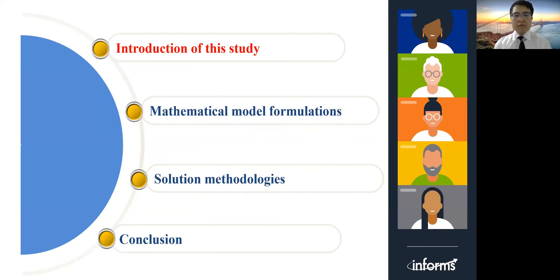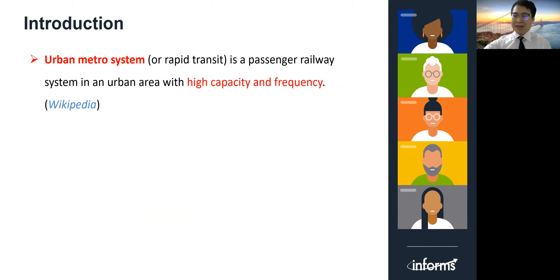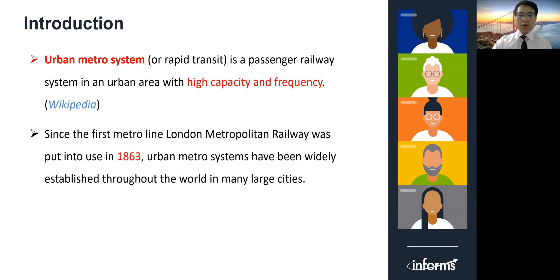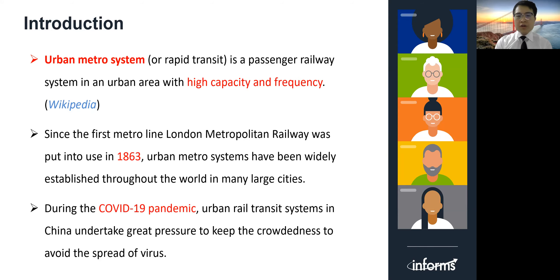The talk involves the following four parts. The first part is the introduction of this study. It is well known that urban metro systems are a passenger railway system in an urban area with high capacity and frequency. Since the first metro line was put into use in 1863, urban metro systems have been widely established throughout the world in many large cities, including Beijing. During the coronavirus pandemic period, urban rail transit systems in China undertook great pressures to maintain operations and avoid the spread of virus, especially for Beijing subway, which involves a large number of passengers.